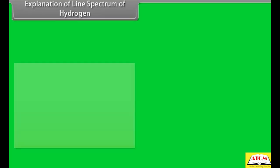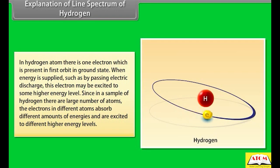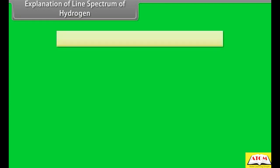Explanation of line spectrum of hydrogen: In a hydrogen atom, there is one electron present in the first orbit in the ground state. When energy is supplied, such as by passing electric discharge, this electron may be excited to some higher energy level. Since in a sample of hydrogen there are a large number of atoms, electrons in different atoms absorb different amounts of energy and are excited to different high energy levels.